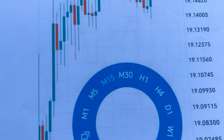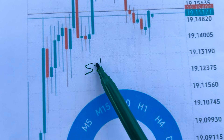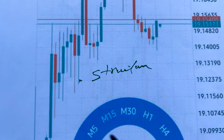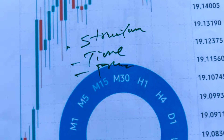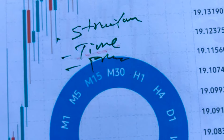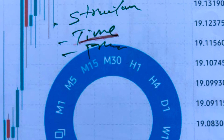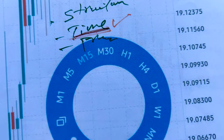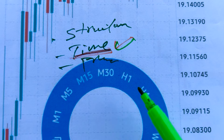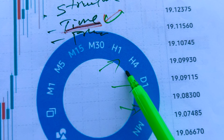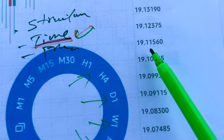Whenever you're trading, we have what we call structure. In any business we have structure, and after structure we have time, and after time we have price. When looking at time — let me demonstrate this — we have time as I'm pointing here on the chart. Time represents timeframes: one hour, H4, daily, one week, one month, and all these timeframes.